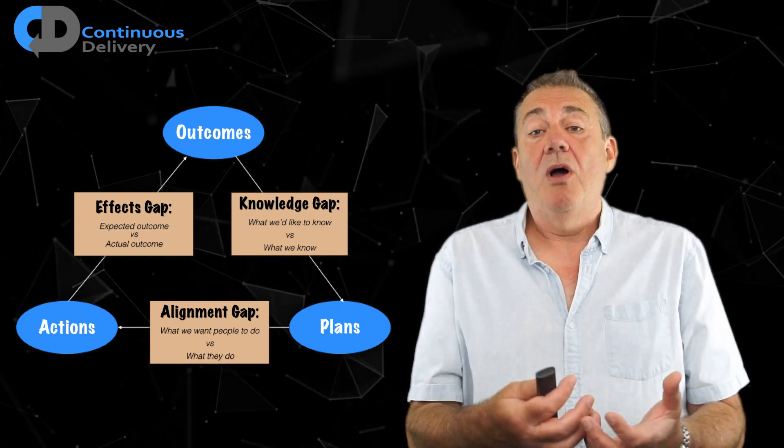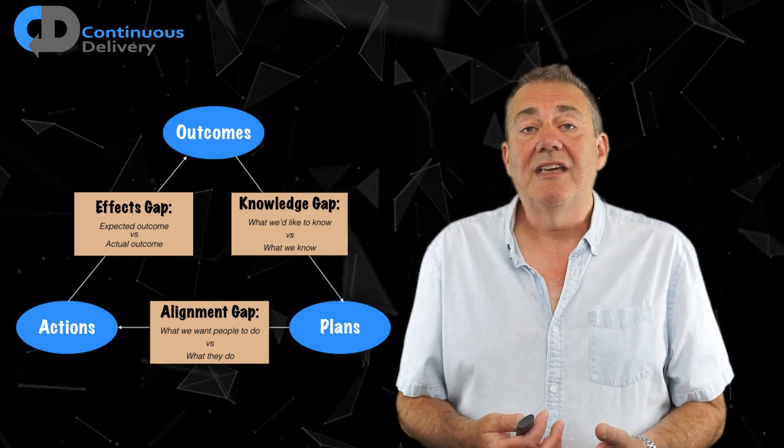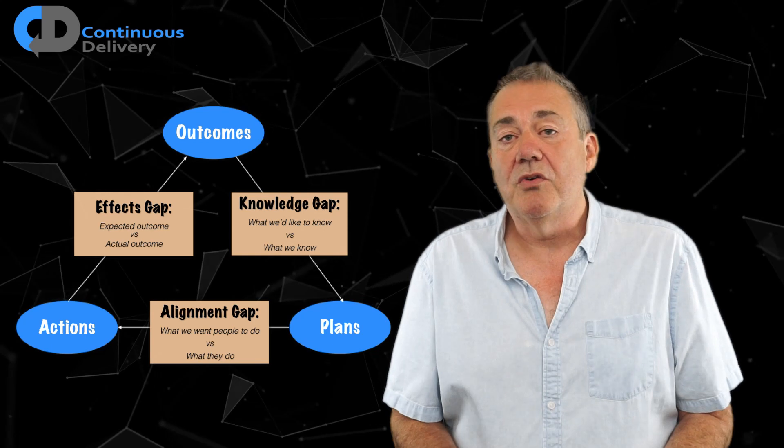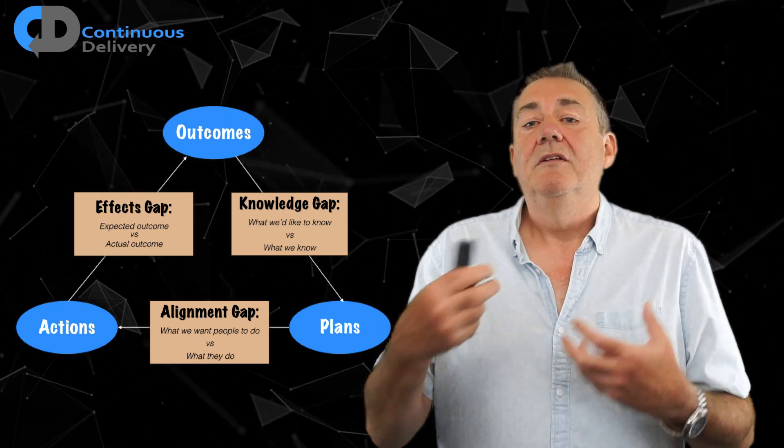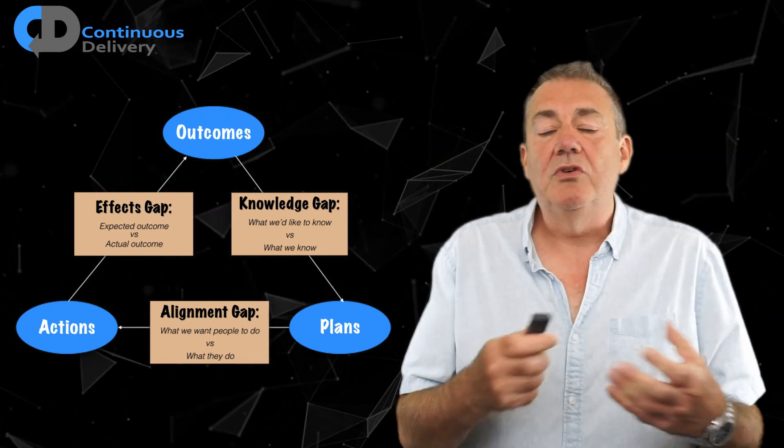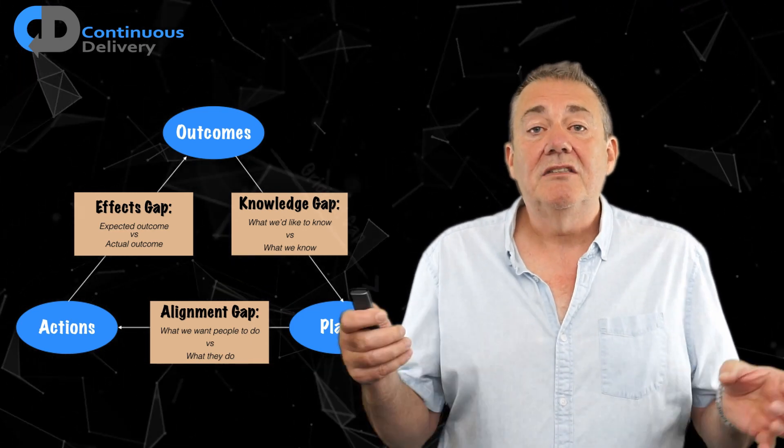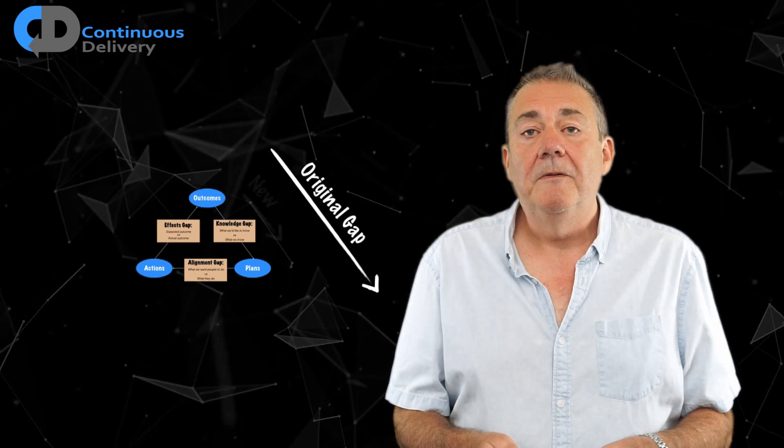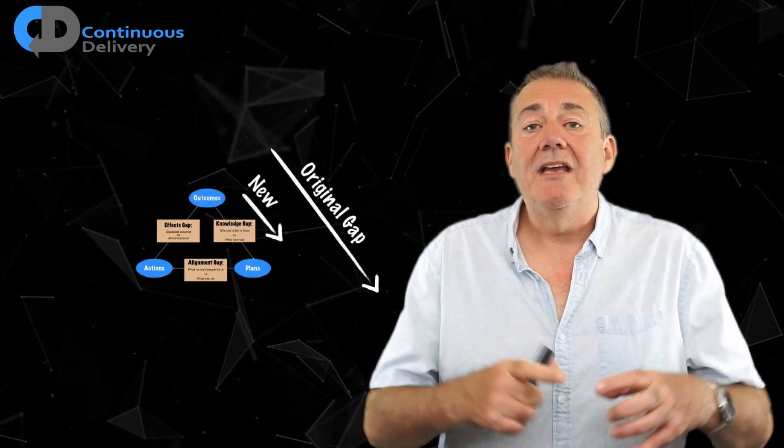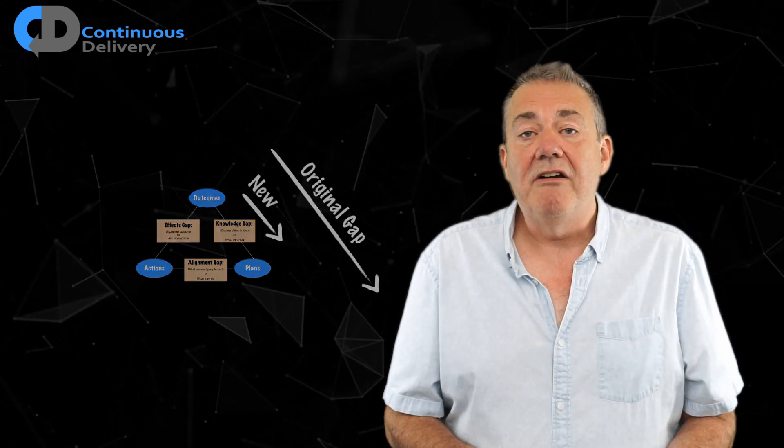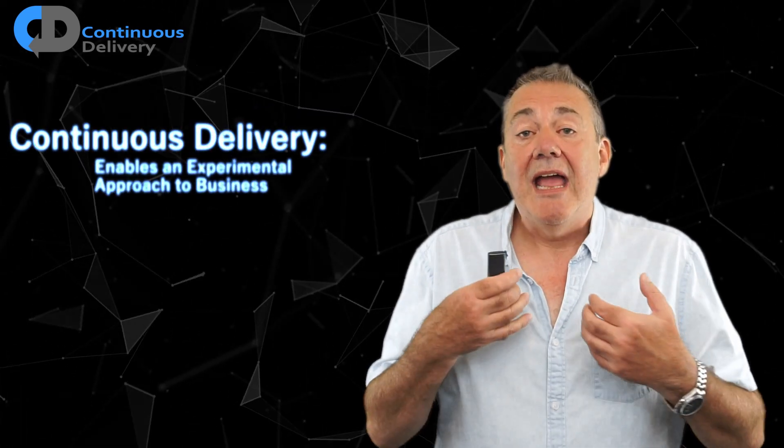This is quite a nice model and it's problematic because how do you reduce the gaps? The traditional way of reducing these gaps is to increase bureaucracy and to be more strict about rules and all that kind of stuff. The most effective way of reducing these gaps though is to shorten the whole cycle. By making these gaps smaller we reduce their impact, and that's precisely what continuous delivery does.